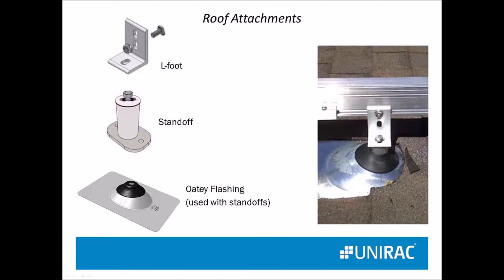Attachments to the roof can be L-foot direct — you could lag this into the rafter. We do want you to attach into a structural member, so you could lag your L-foot directly into the rafter, or you could sit your L-foot up on top of a standoff that gets lagged into the rafter, and a flashing is put down over this standoff. This raises your modules off the roof, which can be an advantage because in very hot weather the voltage drops, so you want to keep them cooled off with air underneath if possible.